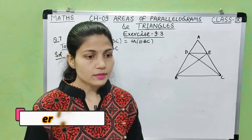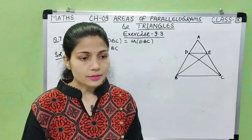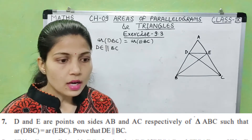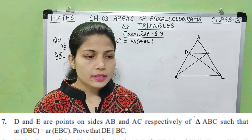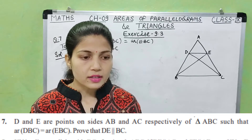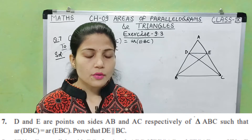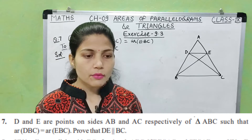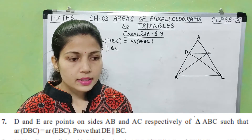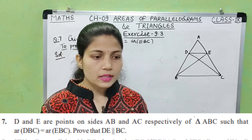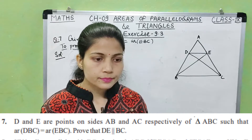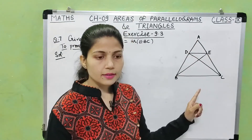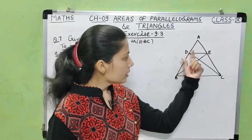Let's start. Question number 7: D and E are the points on the sides AB and AC respectively of triangle ABC such that area of triangle DBC is equal to area of triangle EBC. Prove that DE is parallel to BC.